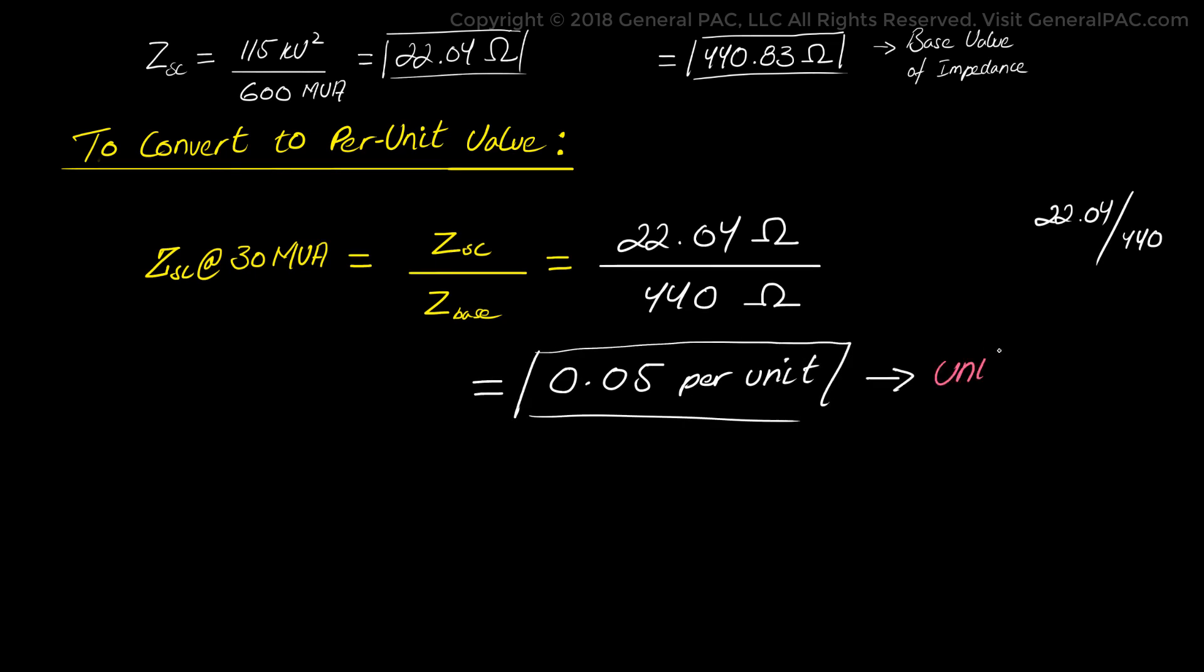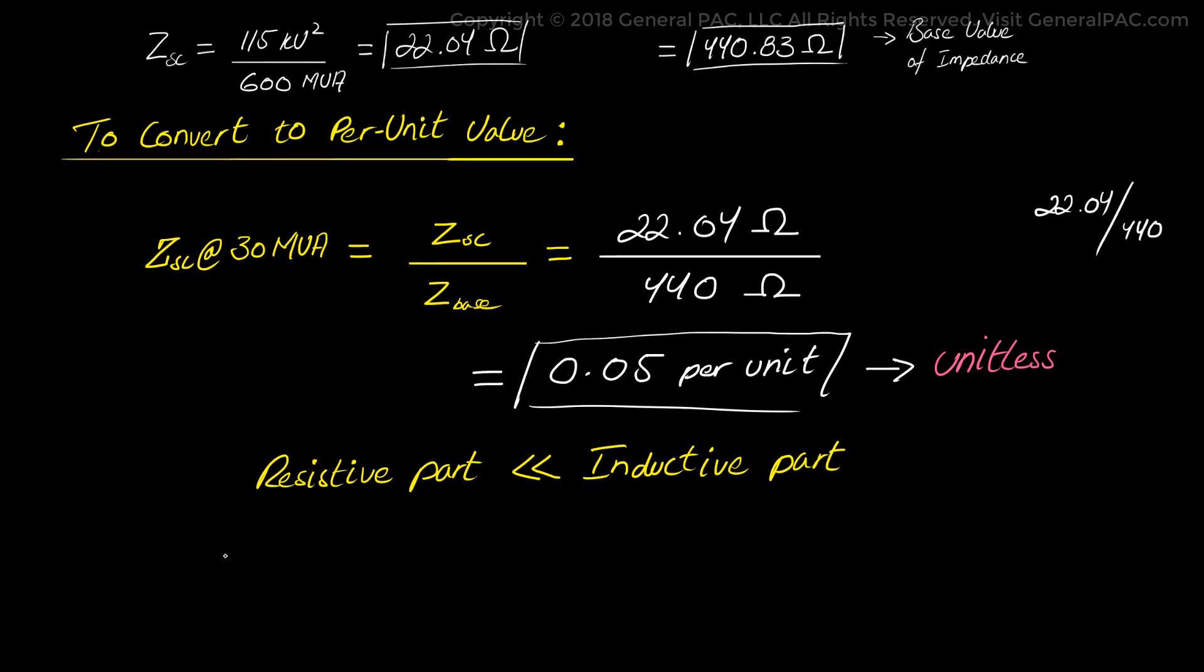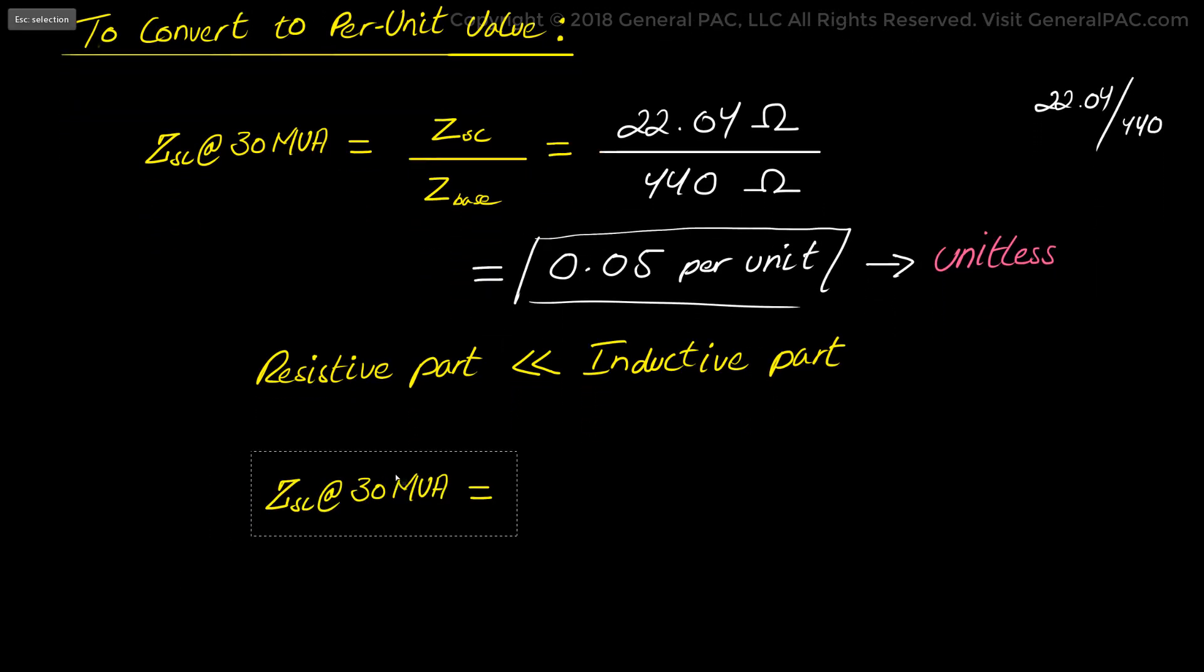Remember per unit is a unitless value. Because practically speaking the resistive part is very small as compared to the inductive part of the generator. We write this as Z short circuit at 30 MVA is equal to 0 plus j times 0.05 per unit.